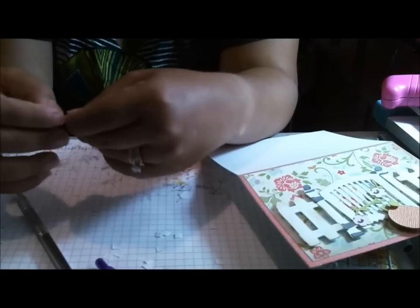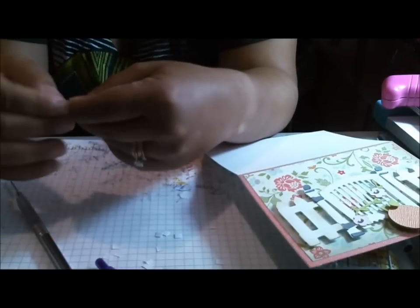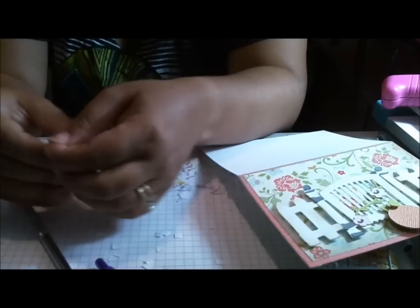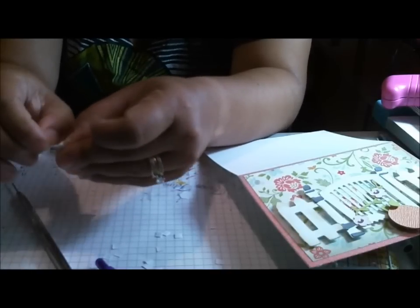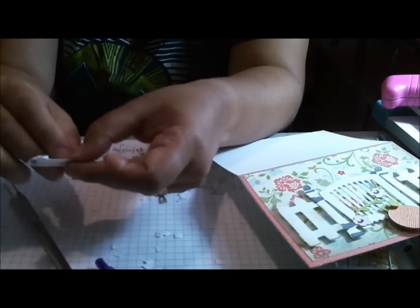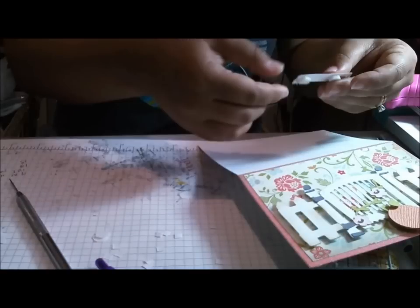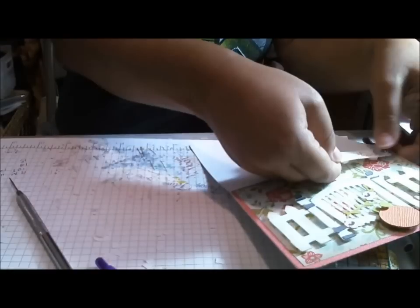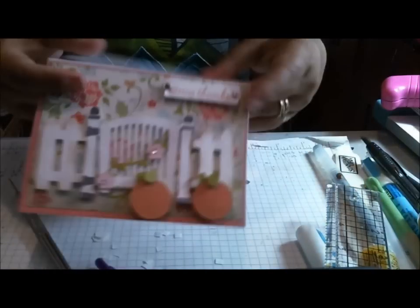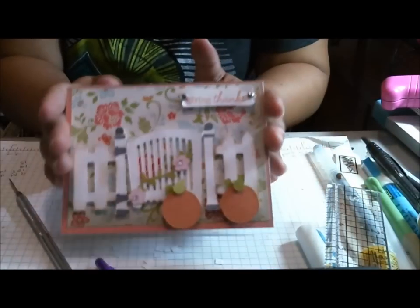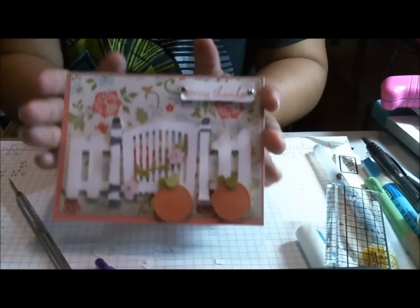I'm trying to hide this brad edge. Okay, there we go. All right. It is on foam tape. This card is almost done. My first fall card. And I'm going to put that right here. And here you go. Here is my card. My first fall card.